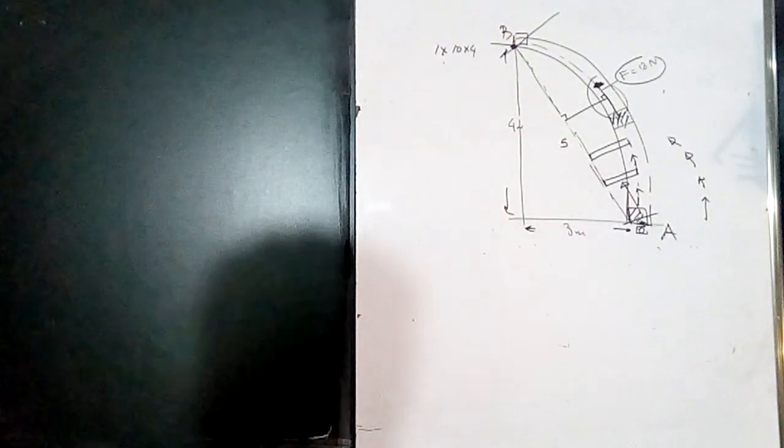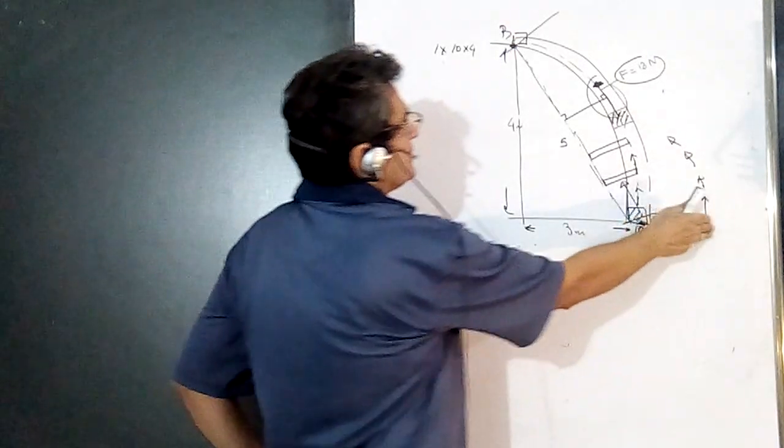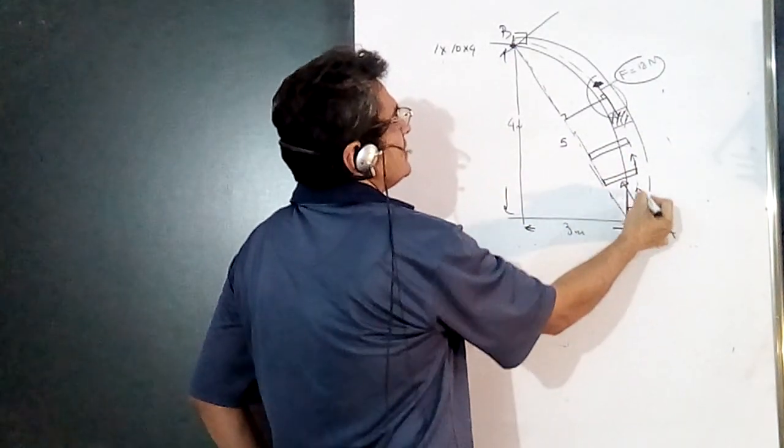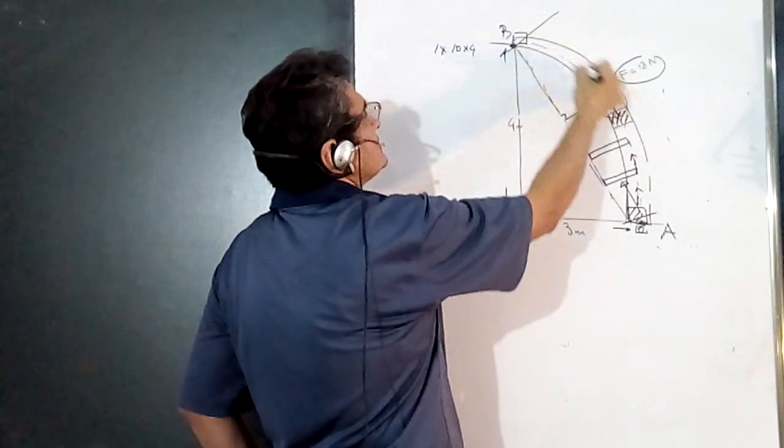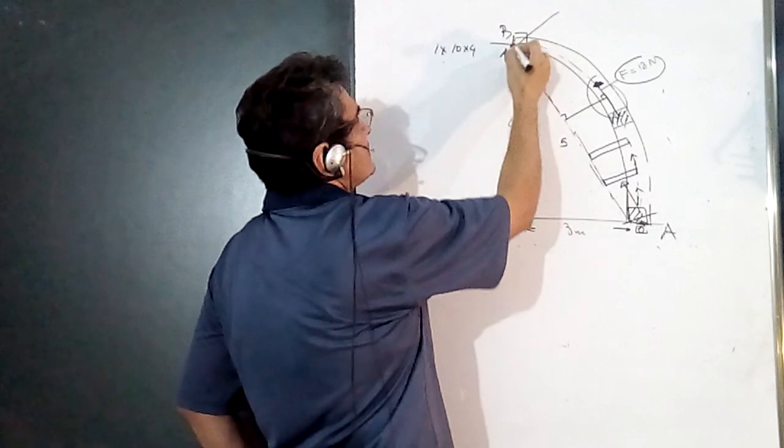We will take a problem from a J.E. paper on work and energy theorem. Here we are given a particle which is moved along this elliptical orbit. This dimension is 3, this height is 4.